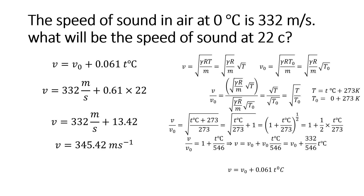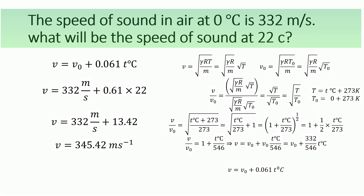Hello everyone, welcome to EGDU. Today we are going to calculate the speed of sound in air at 22 degrees centigrade, given that the speed of sound in air at 0 degrees centigrade is 332 meters per second. It is very simple to calculate.